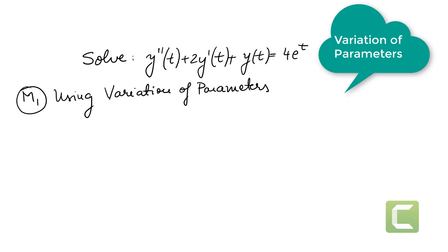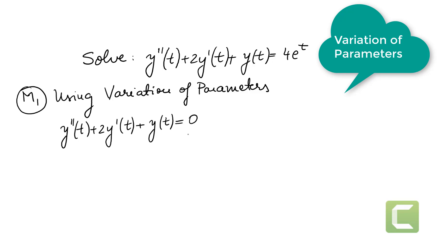The very first thing to do, regardless of the method, is to solve the homogeneous equation. We rewrite the left-hand side completely as it is and set it equal to 0. This makes it a homogeneous equation. The auxiliary equation is r² + 2r + 1 = 0.